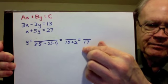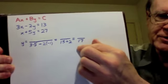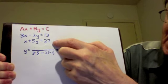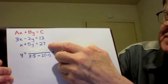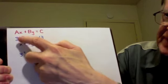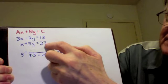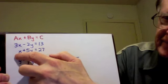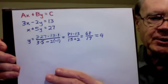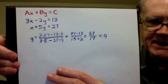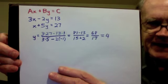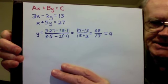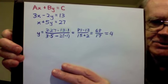Now for the numerator, we do something like that, except instead of using the y column, we use the constants column in its place. So it's going to be 3 times 27 minus 13 times 1. In the numerator, we have 3 times 27 minus 13 times 1. That's 81 minus 13, which is 68. And so we have the fraction 68 over 17, which equals 4.